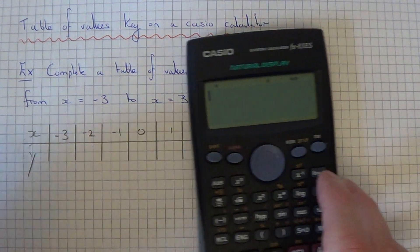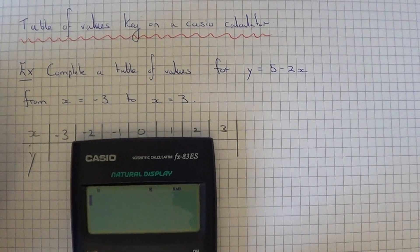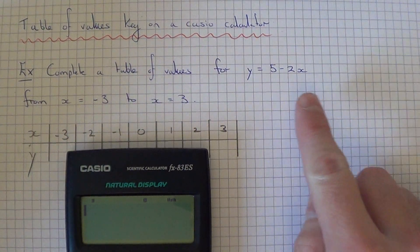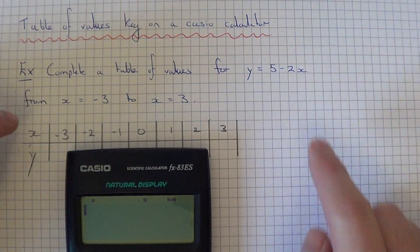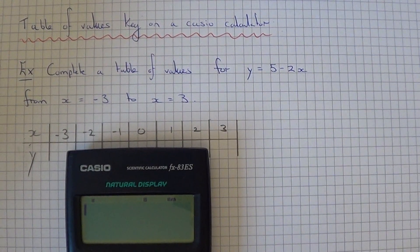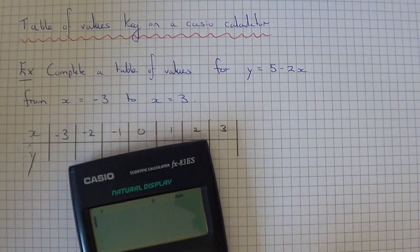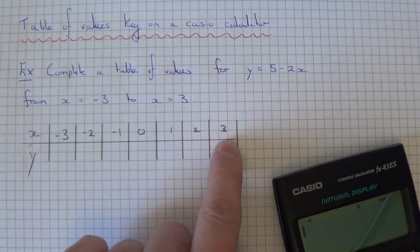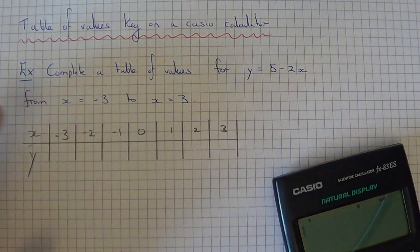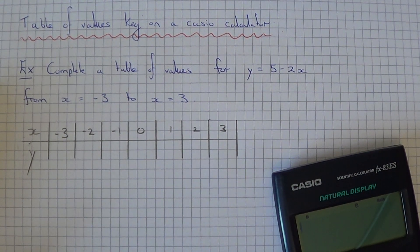Let's look at an example. We've got a completed table of values for y equals 5 minus 2x from x equals minus 3 to x equals 3. I've already drawn out the table from minus 3 to plus 3 and we just need to work out the y coordinates.